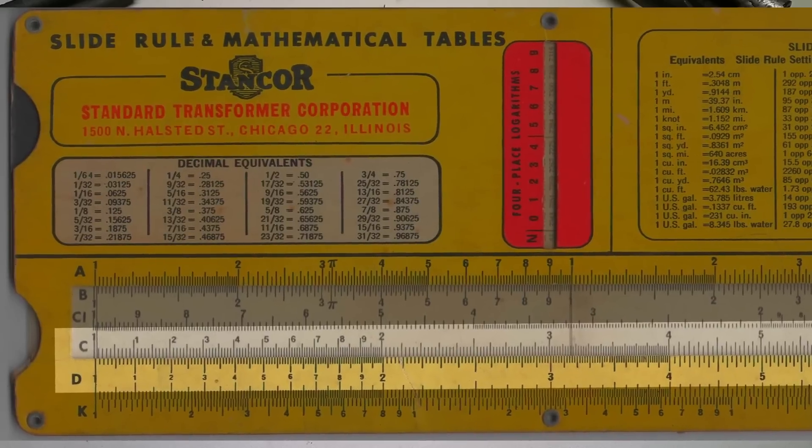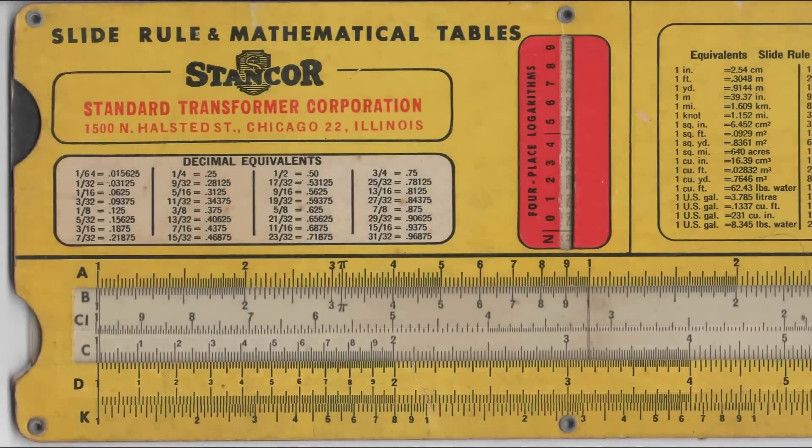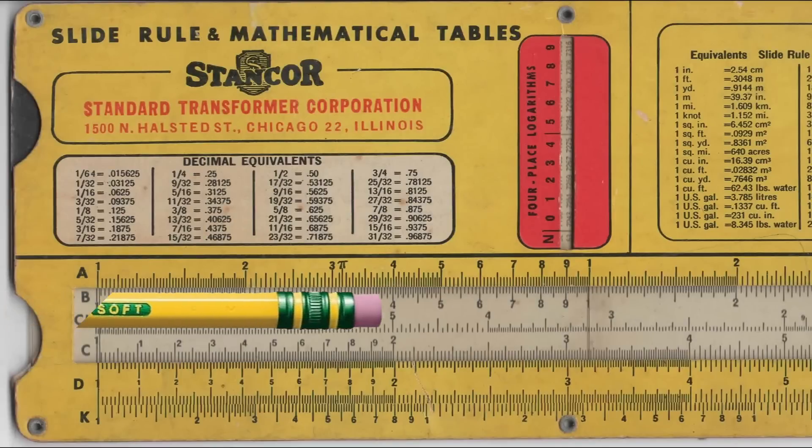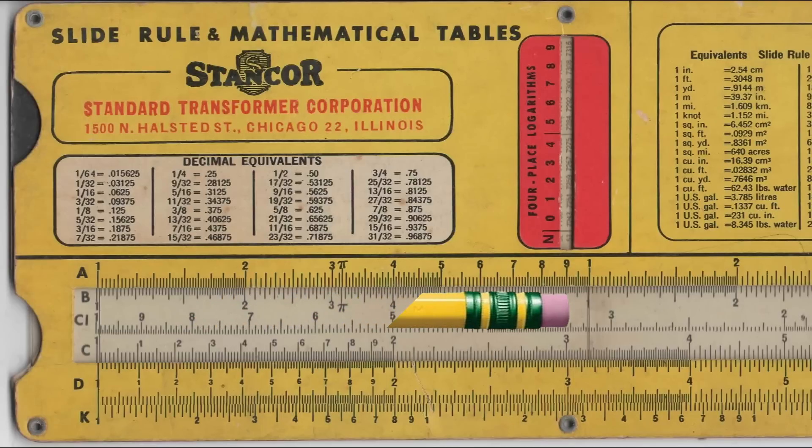You'll notice the divisions on the scales are not perfectly even. Going from 1 to 2 is this much, but from 2 to 3 it's only this much, and then from 3 to 4 it's even less. So the farther out on the scale you go, the less precise it's going to be.